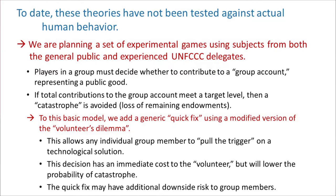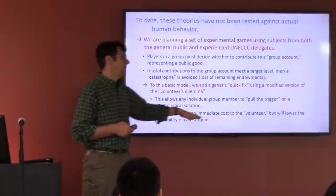In this public goods game, the players are given some endowment and must decide whether to contribute to a group account representing mitigation. If total contributions reach a target level, you avoid a catastrophe — the risk of loss of your remaining endowment. What we're adding is a generic quick fix, making this a variant of the Volunteer's Dilemma: any participant could volunteer to pull the trigger on a quick fix solution, which depending on the game variant either solves the problem or solves it in the near term, with impacts on other players. But someone needs to step up and spend money to provide the technological solution.